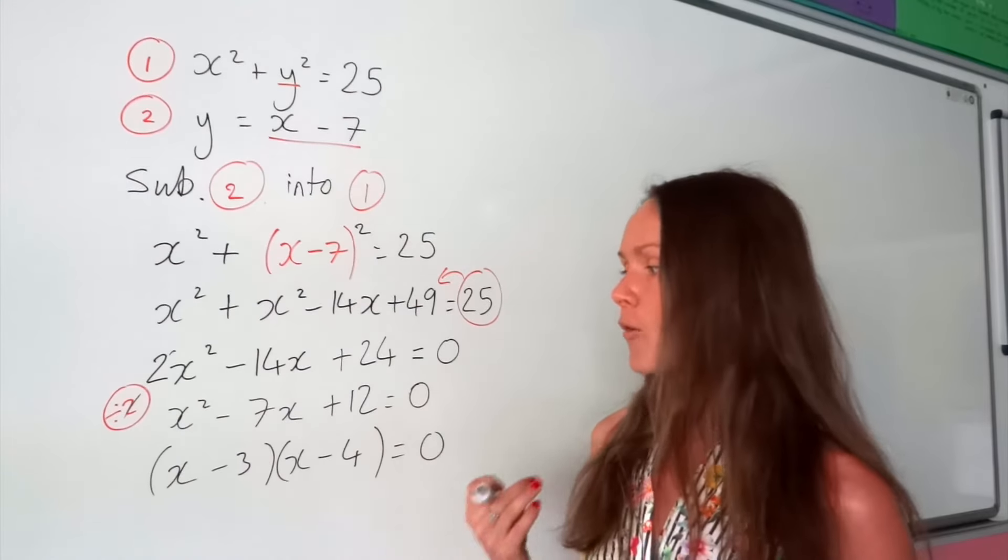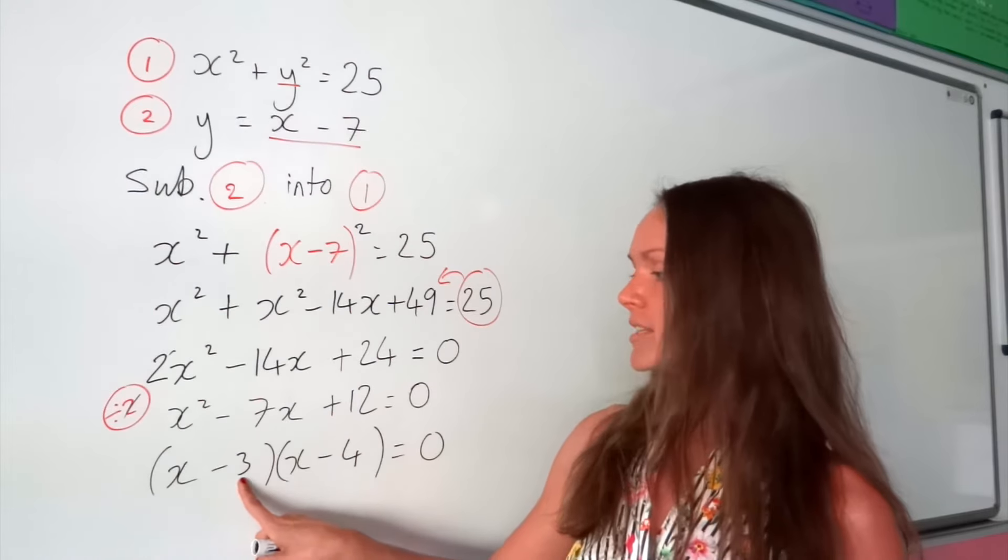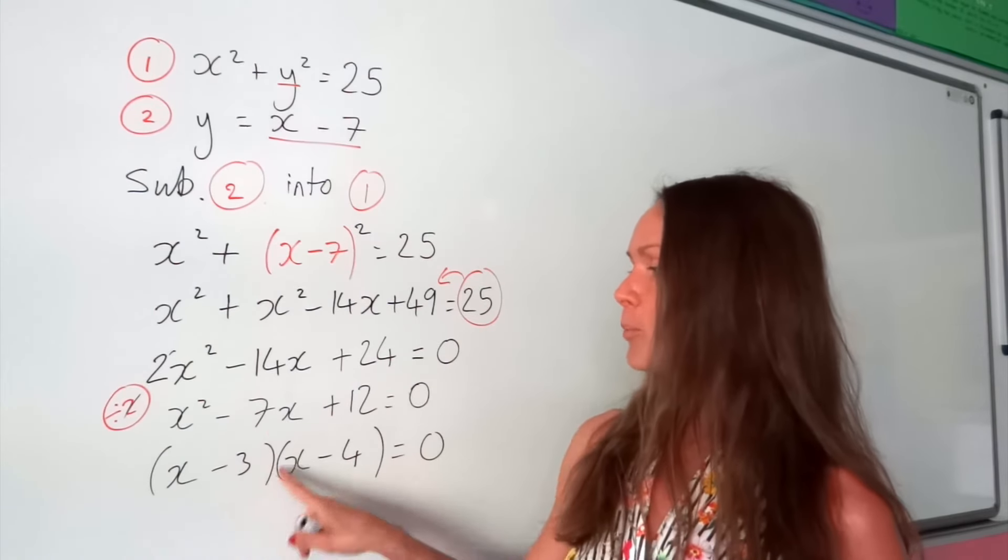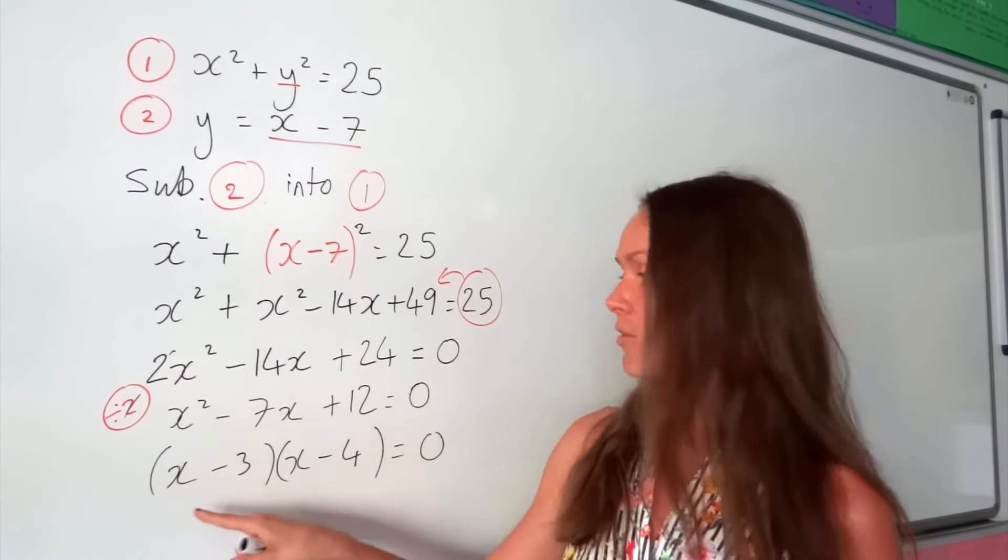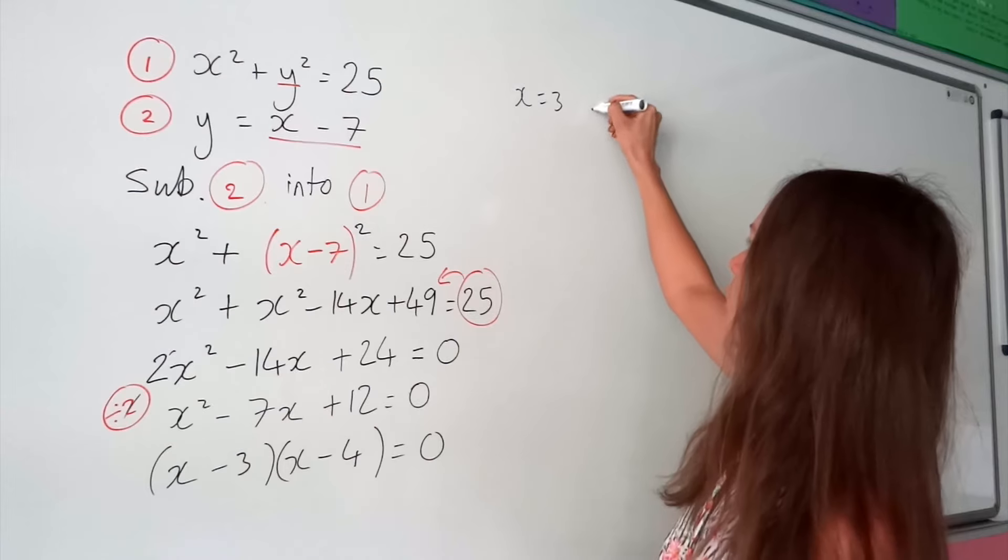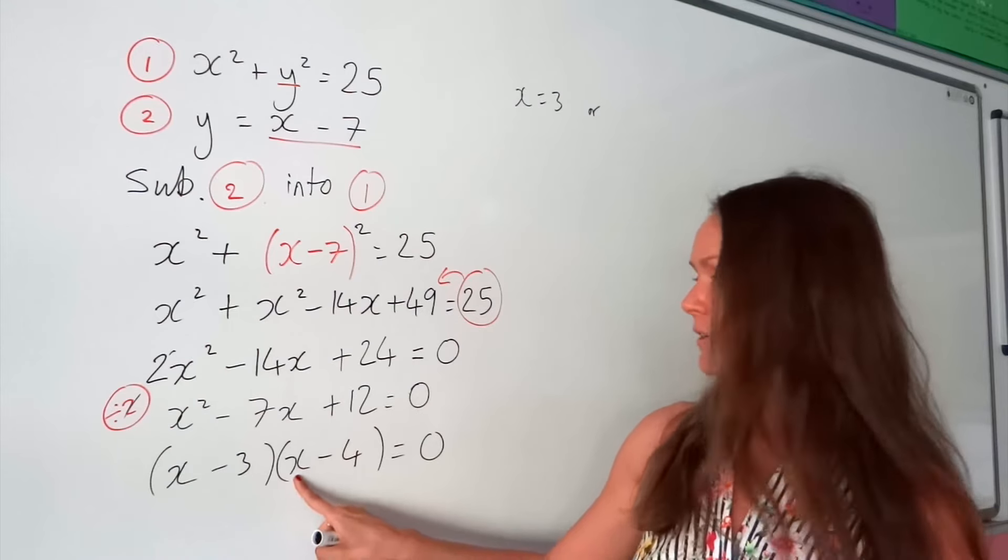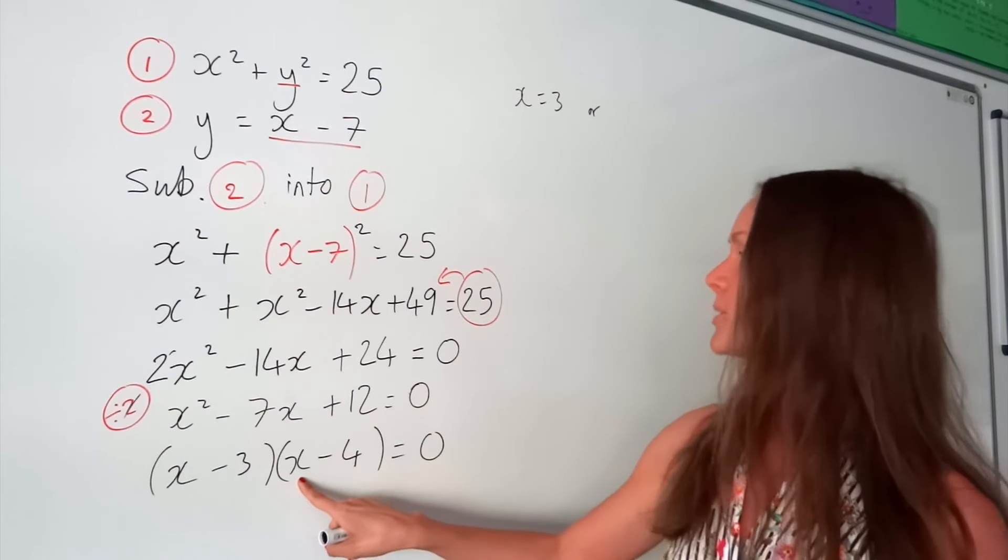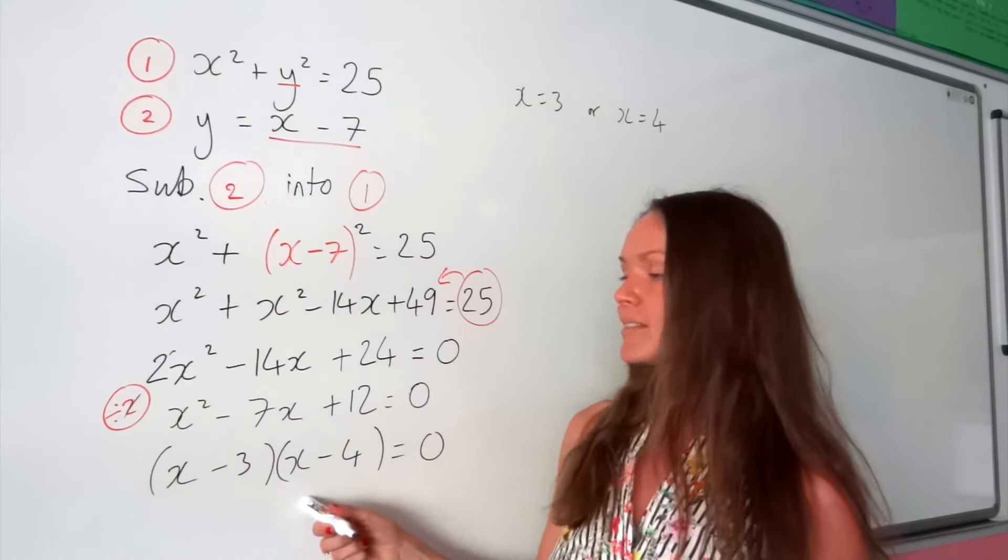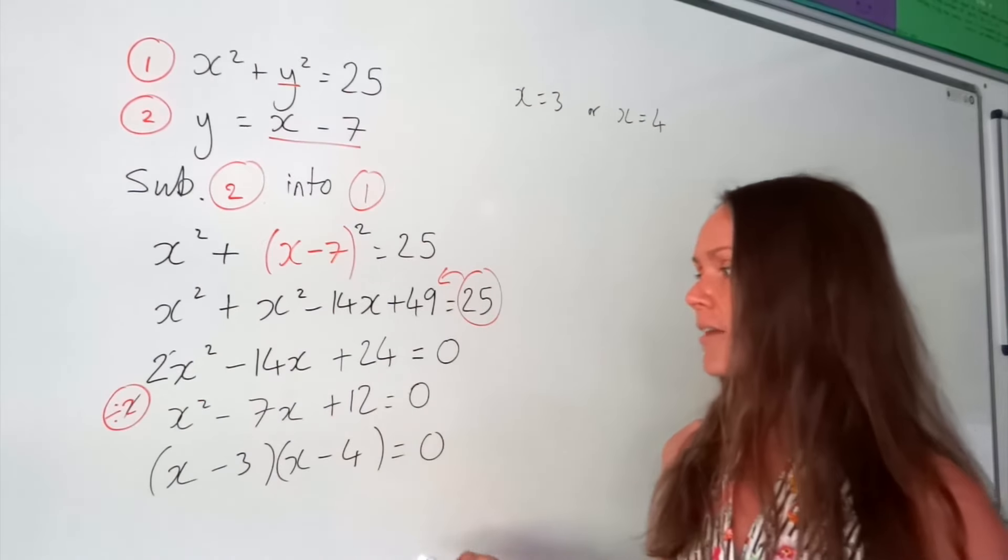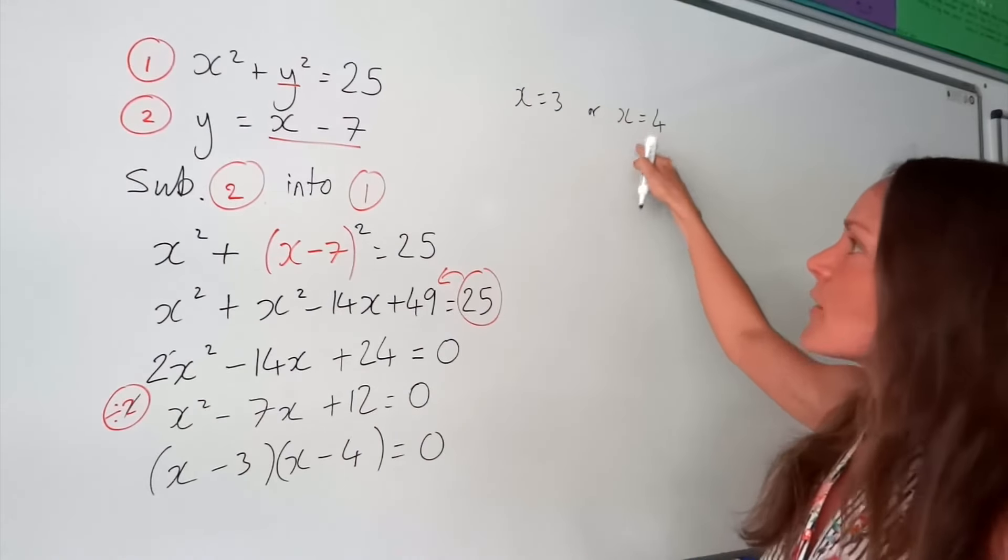So we factorize. Now we can find our values of x. Remember, the first solution of x is just this number but the opposite sign - so positive 3, which makes sense because then 3 minus 3 would give this bracket as being 0. So we've got x equals 3. Or the other value, when this bracket is equal to 0, x would be positive 4. So if you're not very good at solving quadratics by factorizing, I do have another video. But for this question, I'll just assume that you know how to do that.